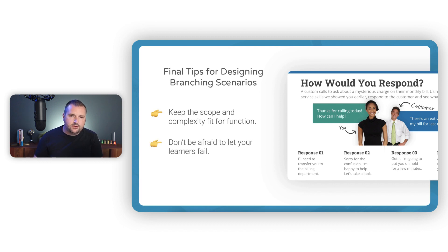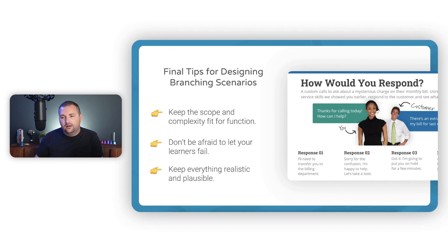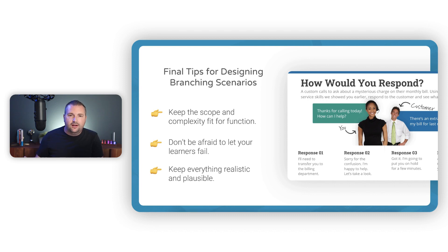Another consideration: don't be afraid to let your learners fail. In some examples, you almost want to encourage the learner to make the wrong decision, because more learning might happen through failure than through just choosing the right answer. Don't be afraid to allow learners to explore and go down the wrong path — there's a lot of learning and engagement that can happen from that. And finally, keep everything realistic and plausible. If you want the learner to truly practice what they'll be doing in the real world, whatever you're creating a scenario on has to have truthfulness and realism.